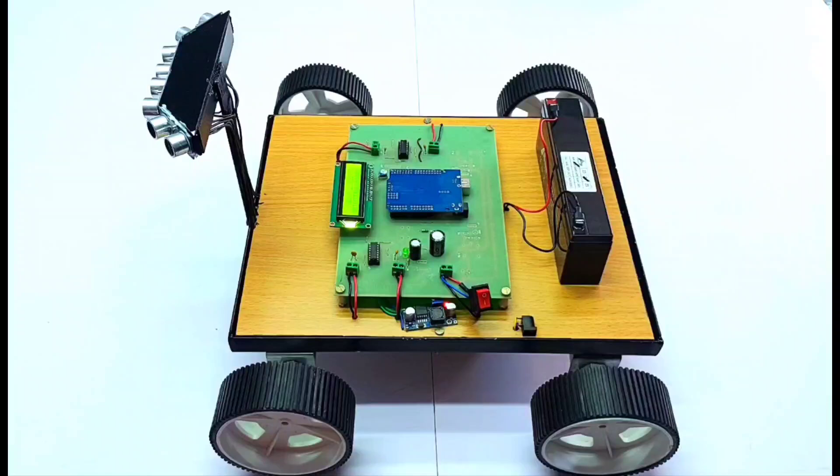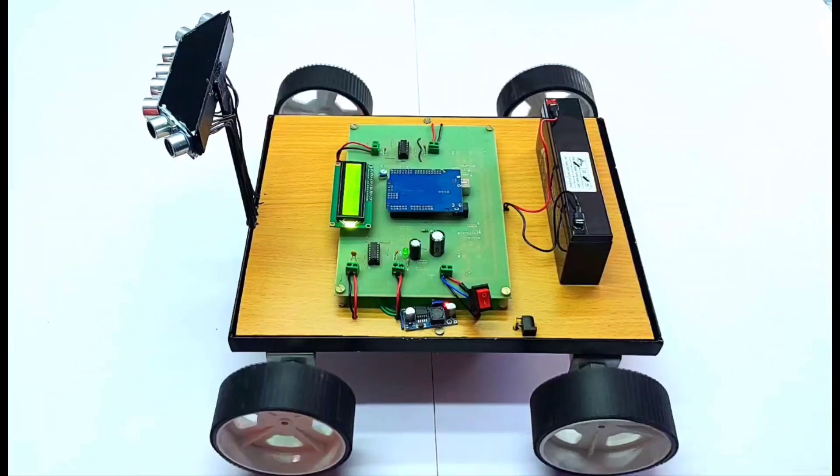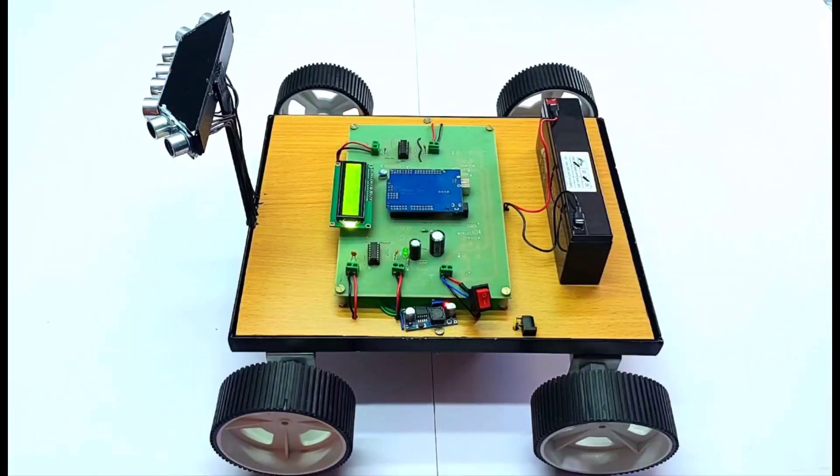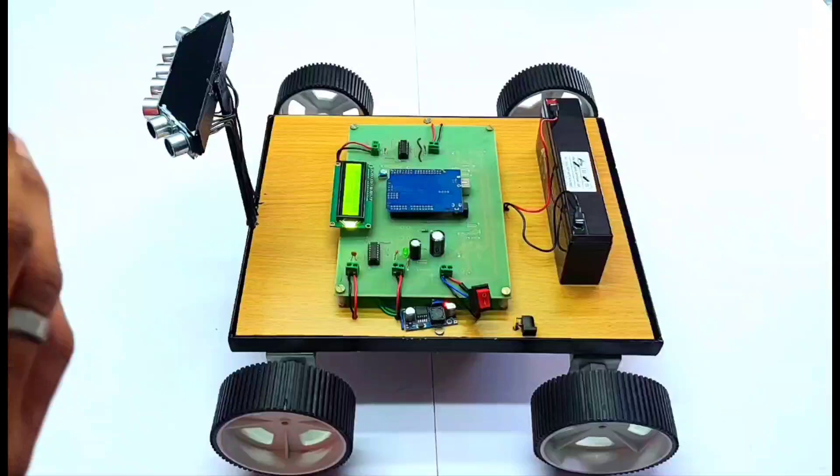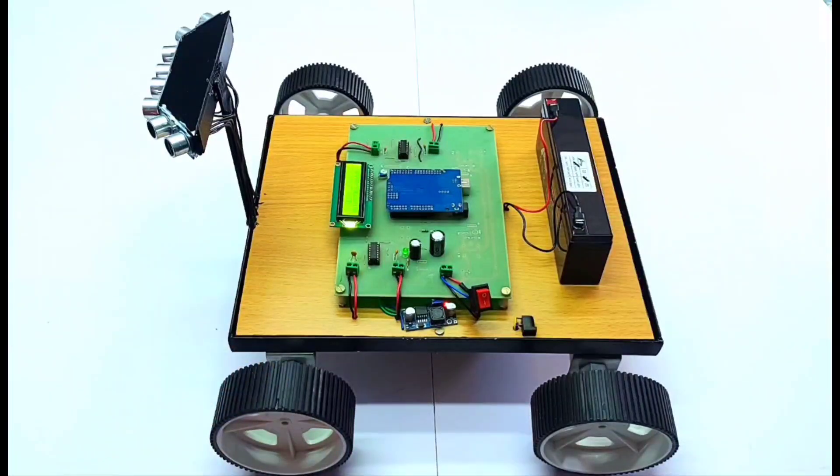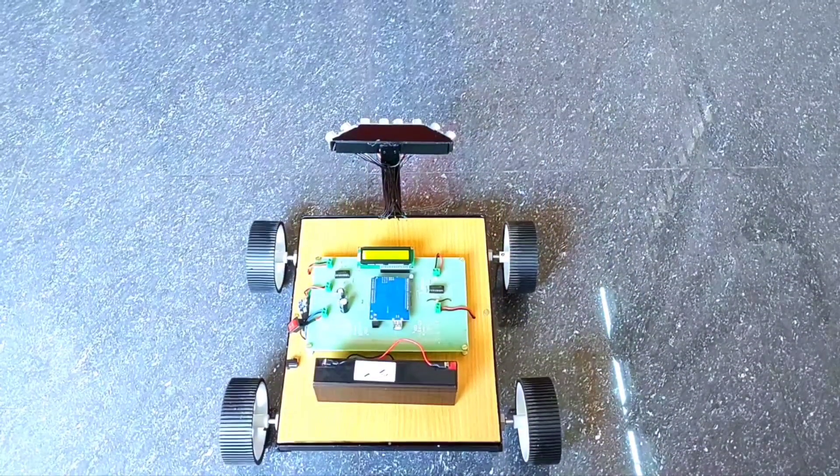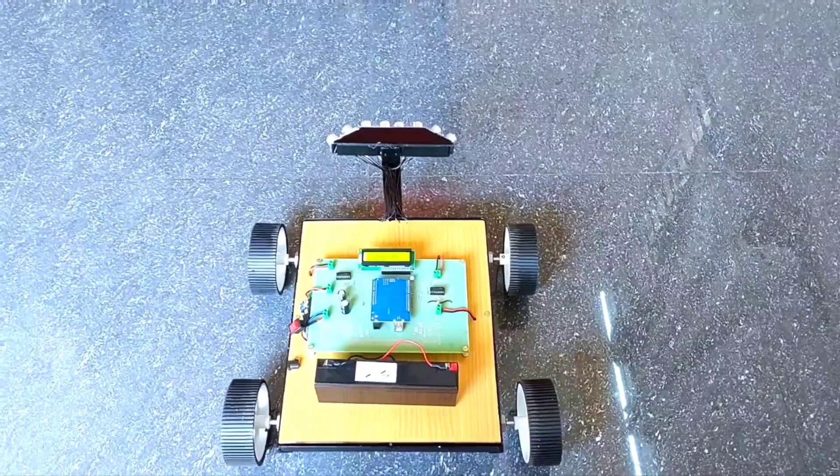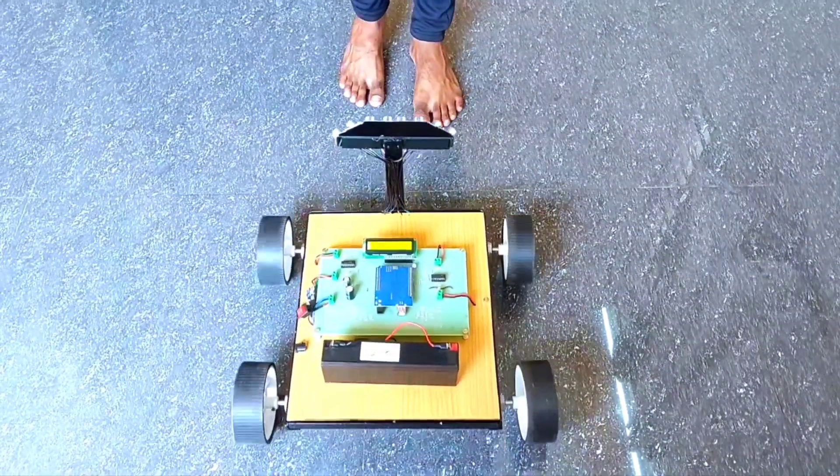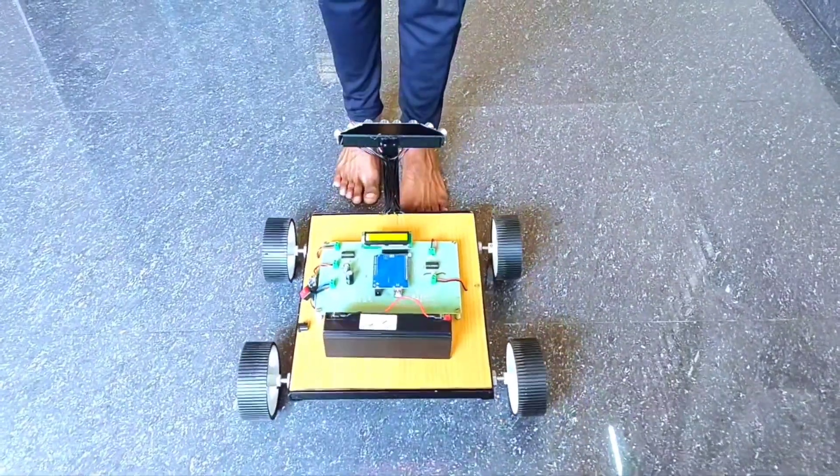Whenever an obstacle or human is detected by the ultrasonic sensor, automatically in that direction the motor will start to rotate. So let's see the working of the project. Whenever I come in front of the robot, it will automatically start to follow me.